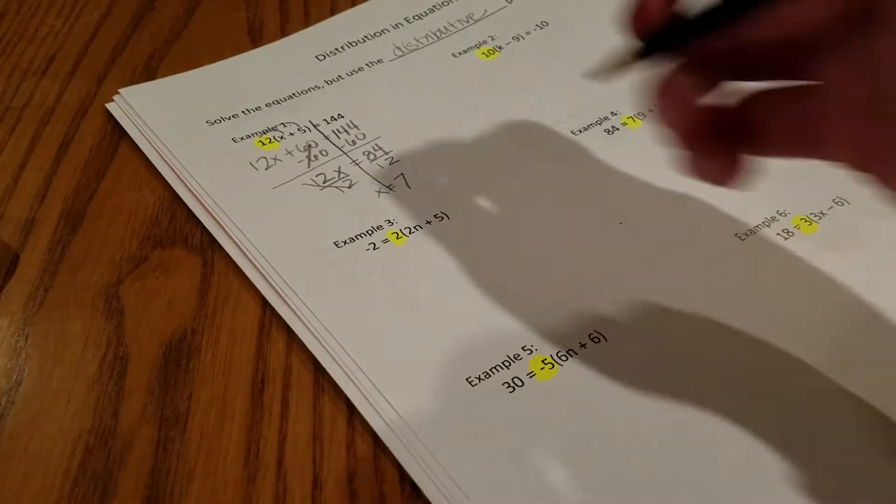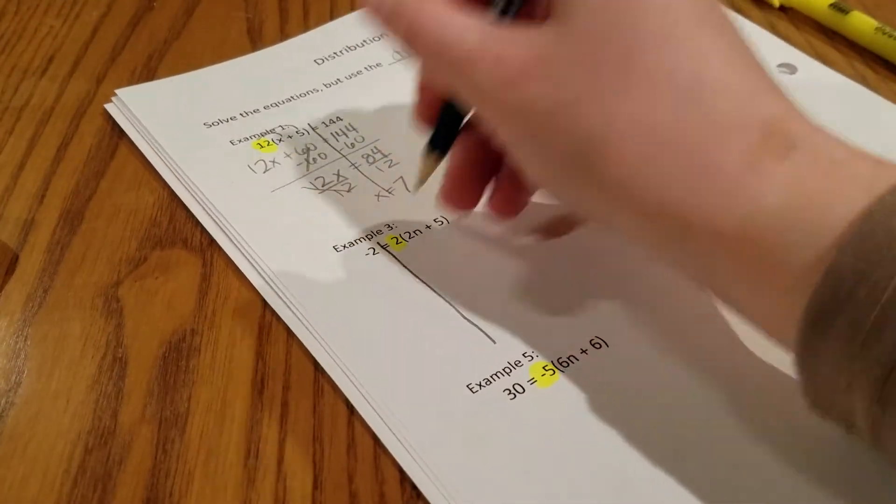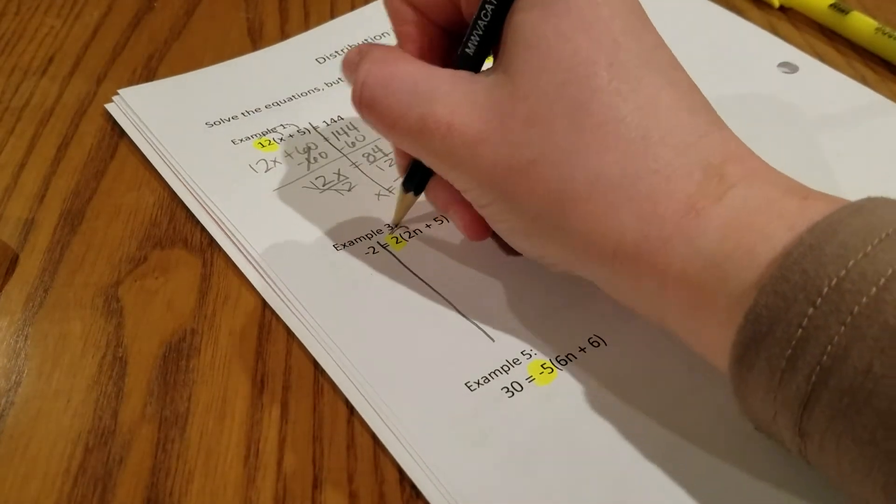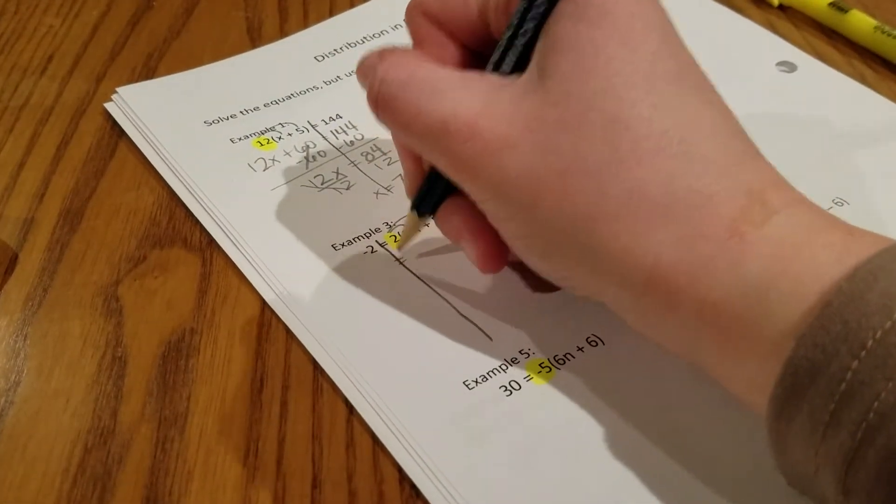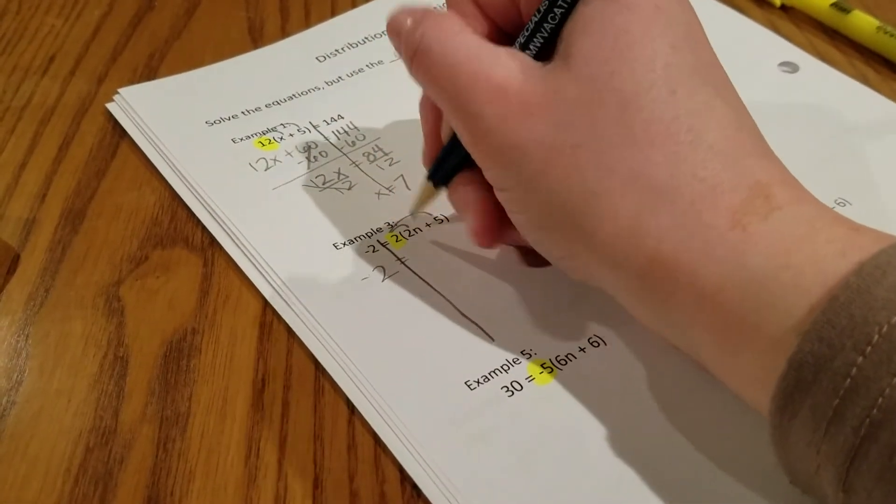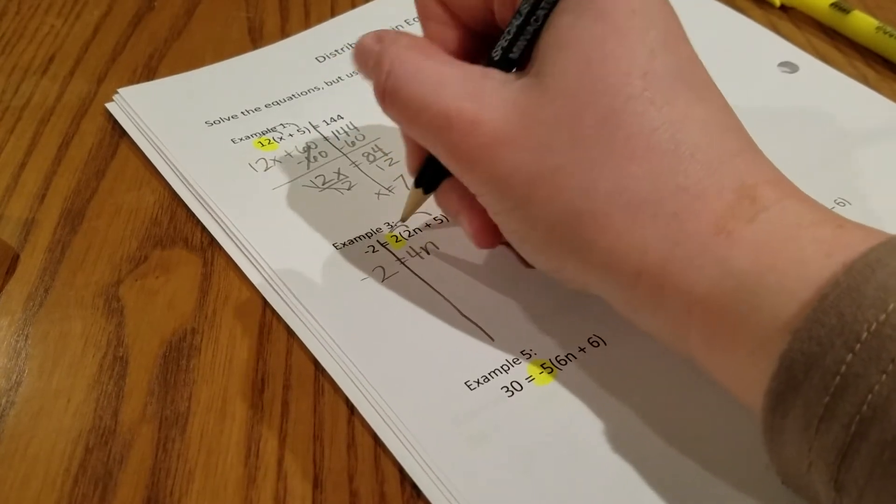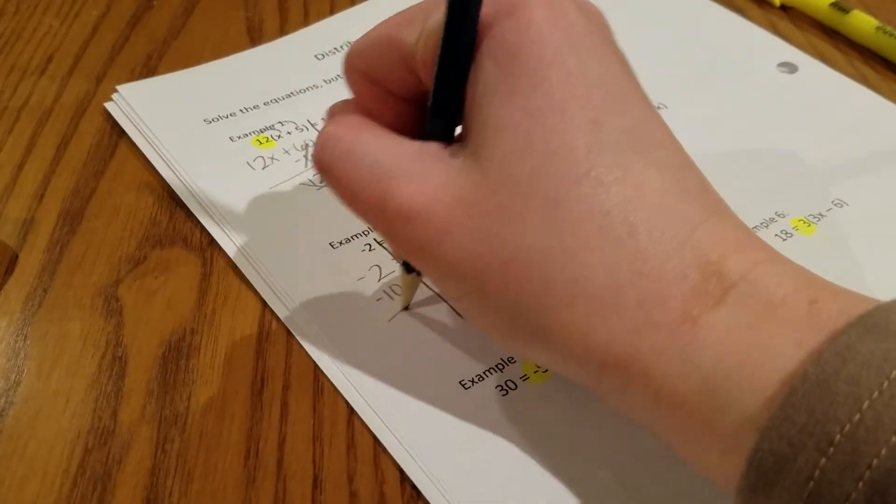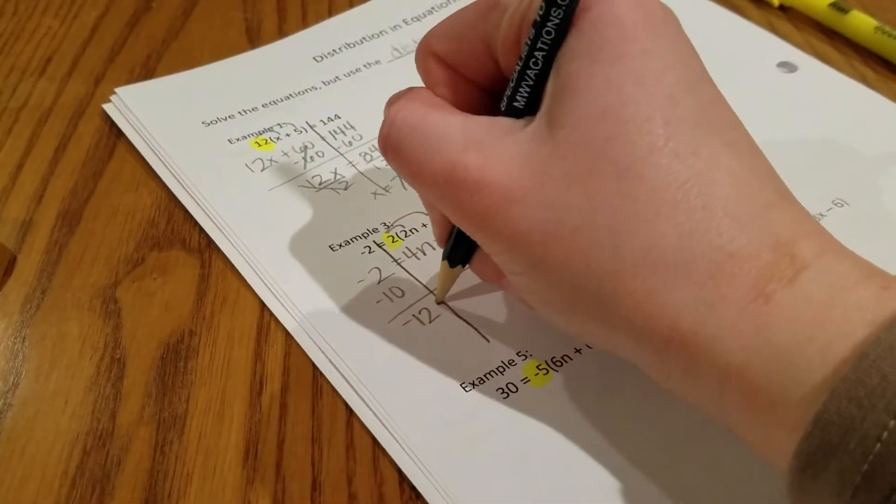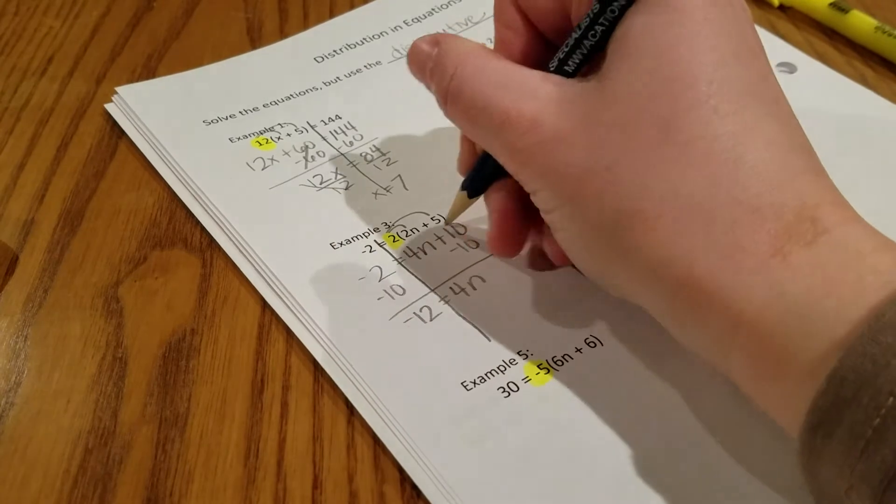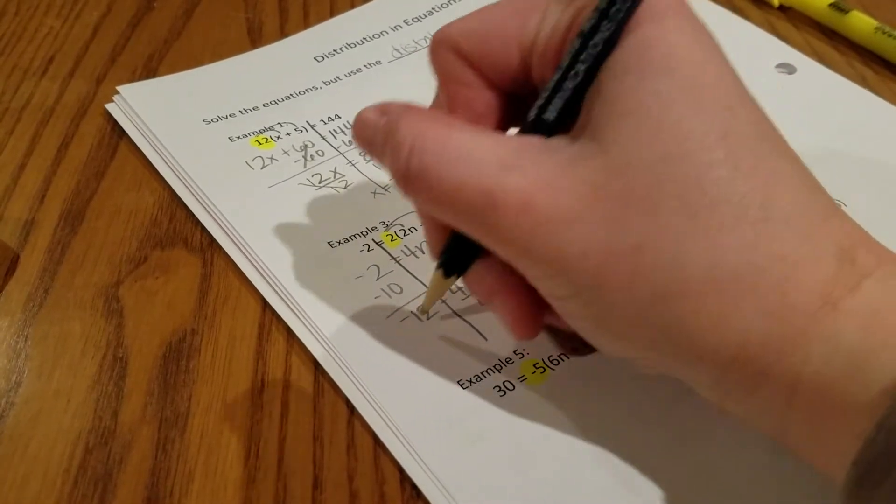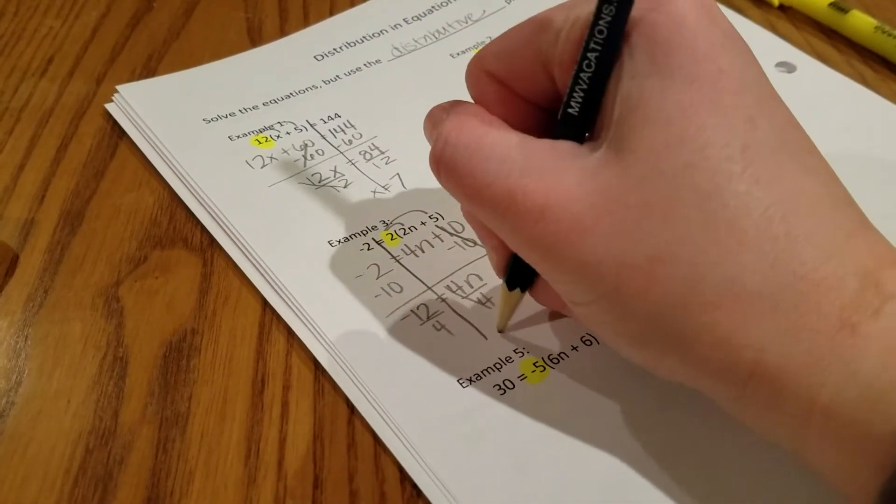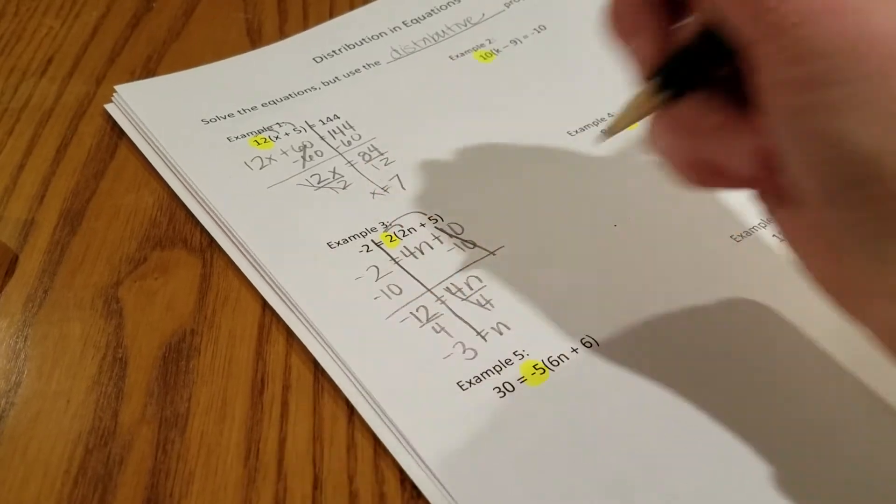In example number three, we're going to drop a line down. Notice the n is on what you would call the wrong side. We're going to leave it there. We've got to practice like that. 2 times 2n is 4n, and 2 times positive 5 is positive 10. Subtract the 10, so I'm going to get negative 12 equals 4n. Those cancel out. Divide by 4, so n equals negative 3.